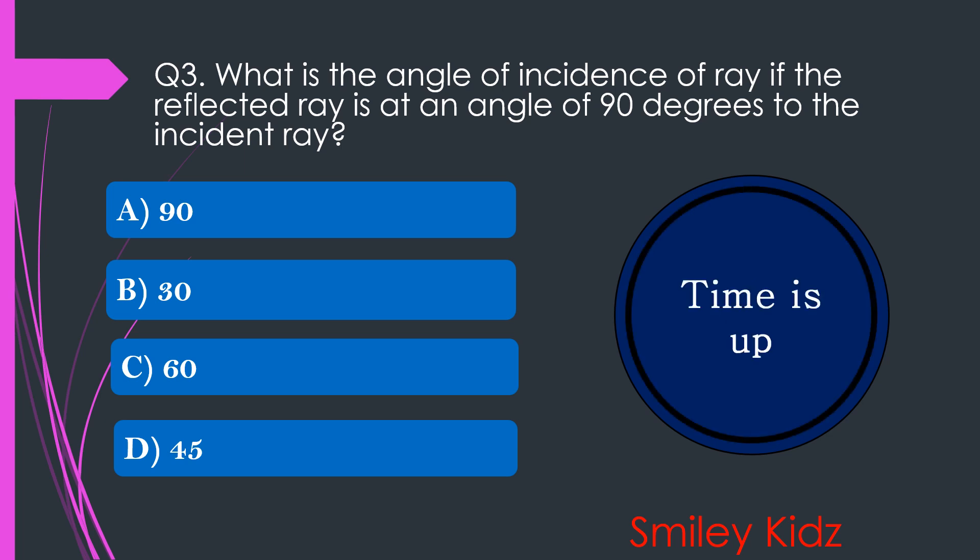Your time is up. The right answer is option D. 45. The angle of incidence is 45 degrees if the reflected ray is at an angle of 90 degrees to the incident ray.